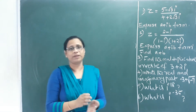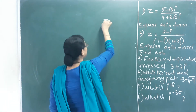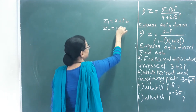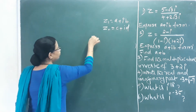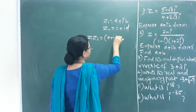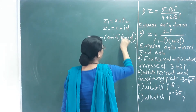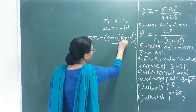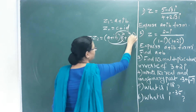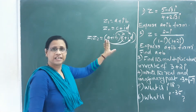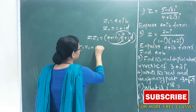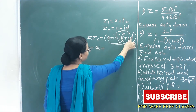Now, multiplication of two complex numbers. If Z₁ = a + ib and Z₂ = c + id, then Z₁ × Z₂ = (a + ib)(c + id). Multiplying out: ac + adi + bci + bdi².